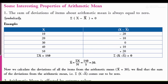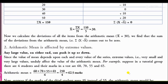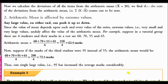Now calculating x̄: x̄ = summation x upon n. Summation x is 150 and total number of items is 5. So 150 divided by 5 gives x̄ = 30. That is your solution — hope you understood.